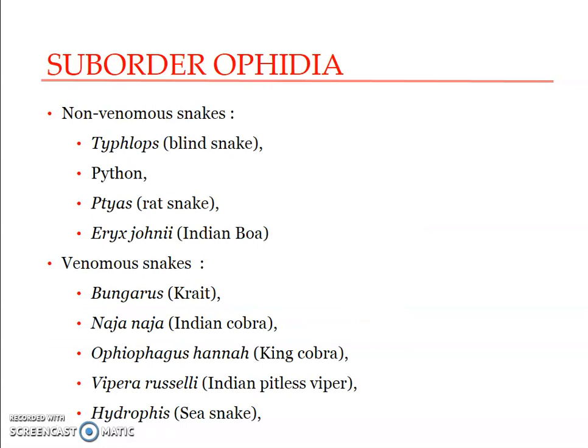Examples of non-venomous snakes include Indotyphlops (the blind snake), the python, Ptyas mucosus (the common rat snake), and Eryx conicus (the Indian boa). Venomous snakes include the common krait, Indian cobra, king cobra, Indian Russell's viper, and sea snakes. As per the syllabus, you are required to learn four non-venomous and four venomous snakes.